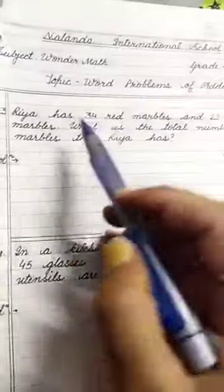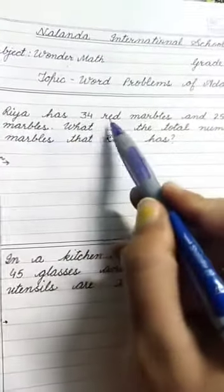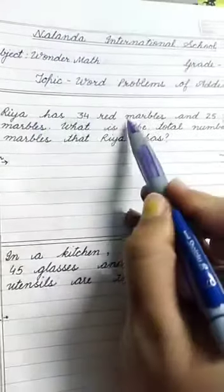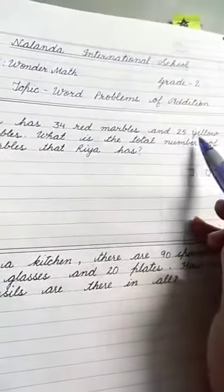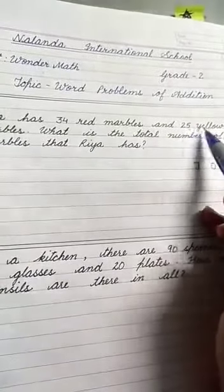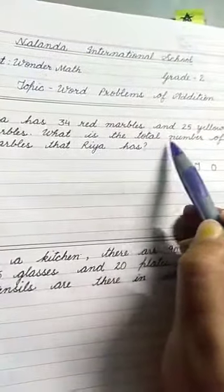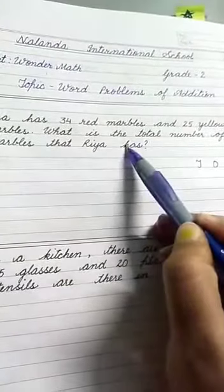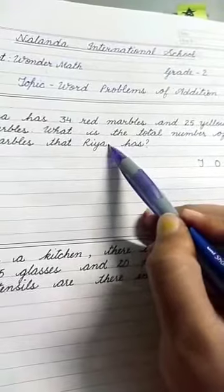Starting with our first word problem, children. Rhea has 34 red marbles and 25 yellow marbles. What is the total number of marbles that Rhea has? So children, we need to find out the total number of marbles.